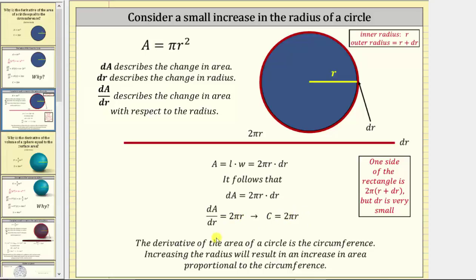So the derivative of the area of a circle is the circumference. Increasing the radius will result in an increase in area proportional to the circumference.